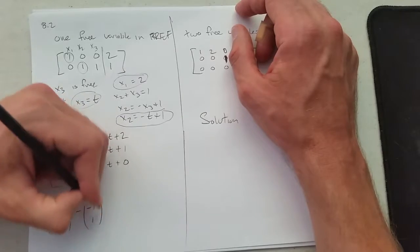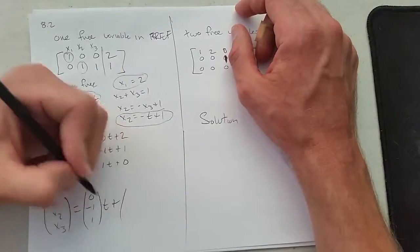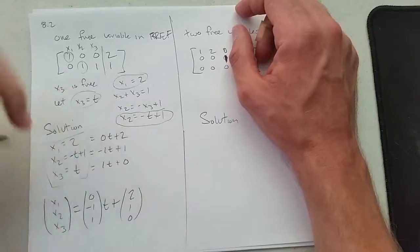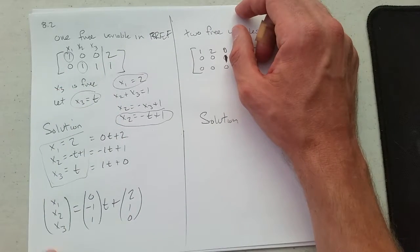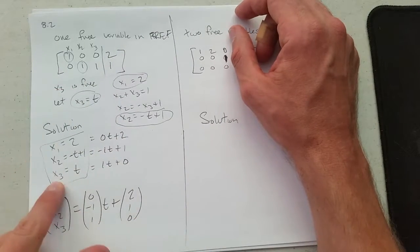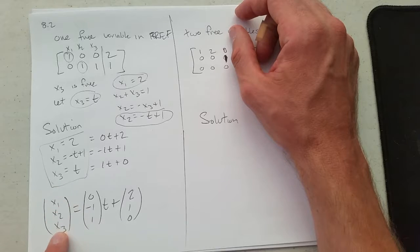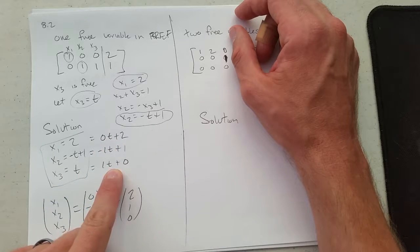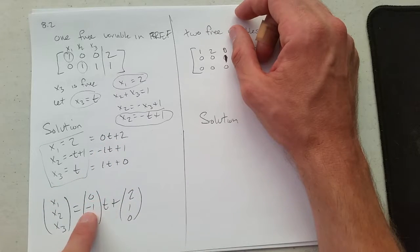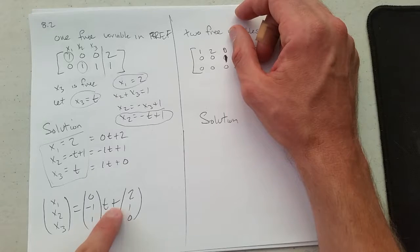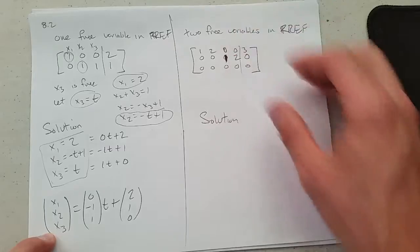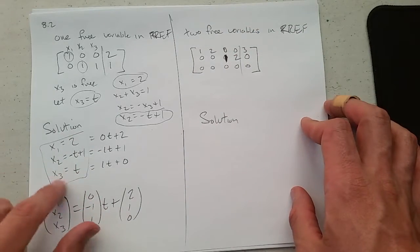So if we write it. 0, negative 1, 1 times t plus 2, 1, 0. So this could be written out in vector form. All I did was basically take this as a column. t right here. They all have a t in it. 0t, negative 1t, 1t, times t plus constant 2, 1, 0. Most of the WebWorks I think will be answering like that.